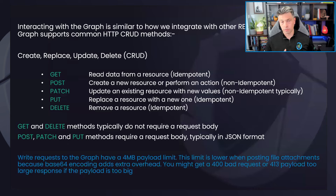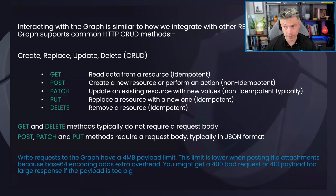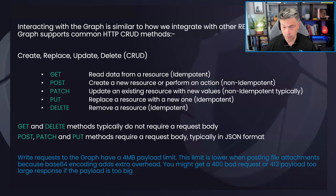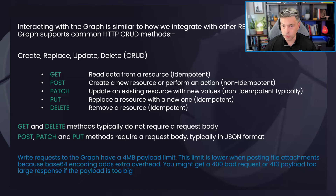When we talk about how we interact with the Graph, it's the same way you'd interact with any REST API. The Graph supports common HTTP CRUD methods: GET, POST, PATCH, PUT, and DELETE. GET is for reading data from a resource — it's an idempotent request, so you'll always get back the same data. POST is for creating a new resource or performing an action — it's non-idempotent, so you're always posting something different.